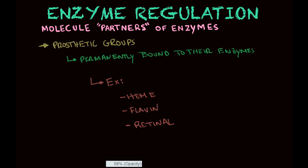The last group is prosthetic groups, which are usually permanently bound to their enzymes. Examples include the heme group — the group attached to the oxygen-carrying protein in your blood, hemoglobin, hence the name heme — and also flavin and retinol.